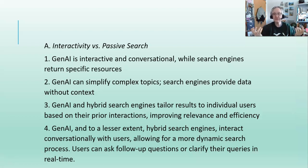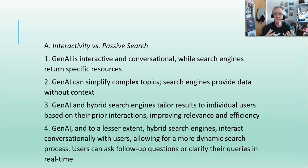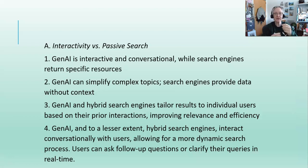Search engines give data but don't give context around it — they just hand you that journal article. Generative AI uses the question to get closer to the pattern and tailors results to individual users based on prior iterations, which improves relevancy and efficiency. With a search engine, the more specific your search term, the better your results — but that's because it's a new search, not because it's building on prior questions. Generative AI and hybrid search engines interact dynamically, whereas with a search engine you look at the results, determine what's appropriate, and then search further.